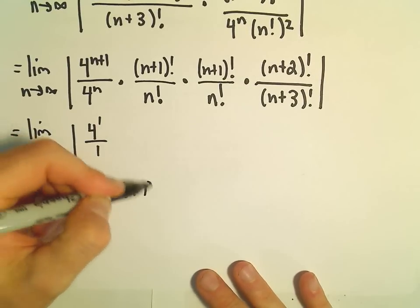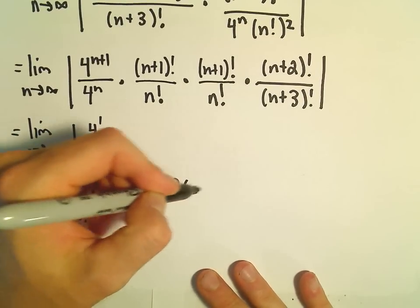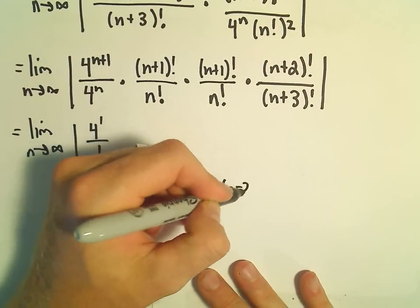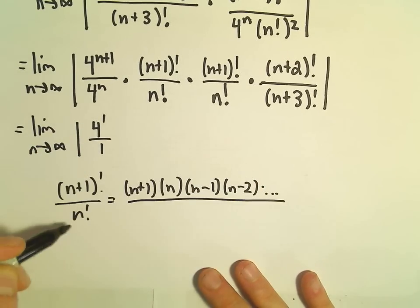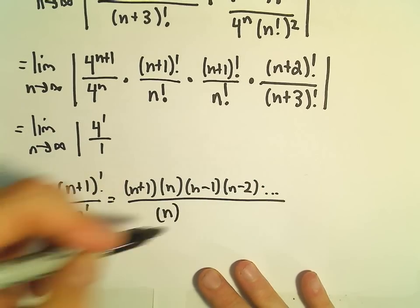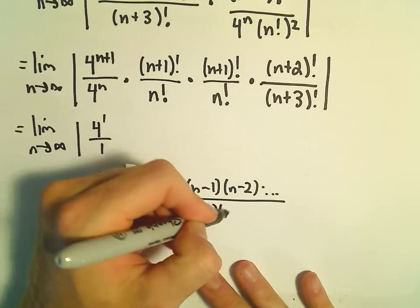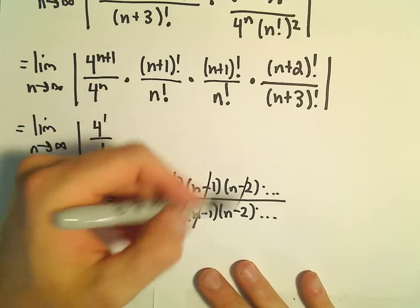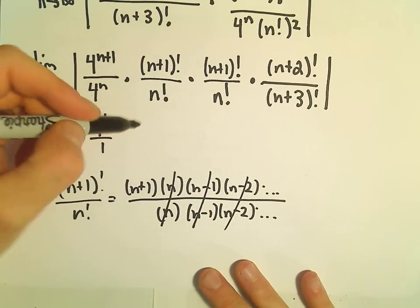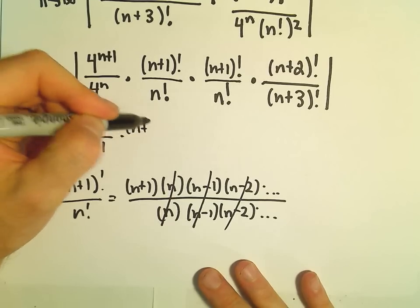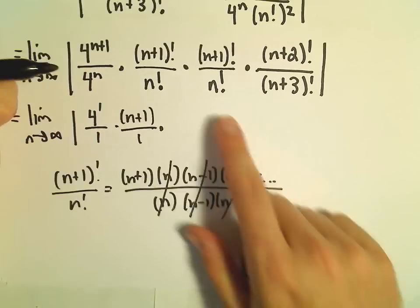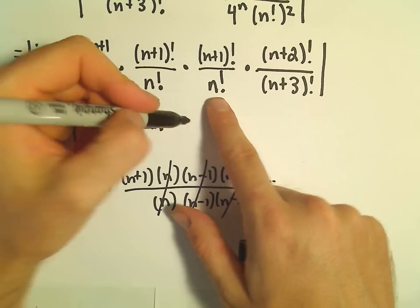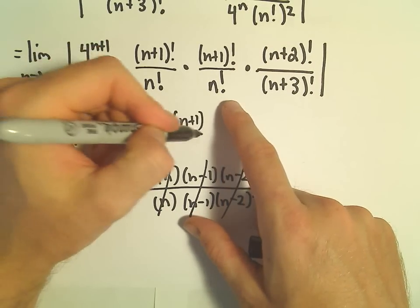Again, if you imagine expanding this out, you would have n plus 1 times n times n minus 1 times n minus 2 dot dot dot. In the denominator, n factorial would be n times n minus 1 times n minus 2 times dot dot dot. So everything would cancel out except for an n plus 1. So we would have an n plus 1 in the numerator. Same thing's going on with our third factor. So we would have n plus 1 over 1.